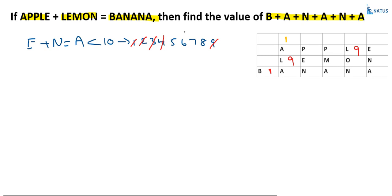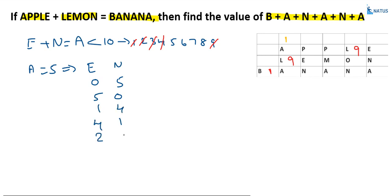Now let us take A equals 5. Then E and N can be: (0,5), (5,0), (1,4), (4,1), (2,3), (3,2). The pair (0,5) is invalid because N would equal A. The pair (5,0) is also invalid for the same reason. The pair (1,4) is invalid because 1 is already assigned to B. So those are eliminated.